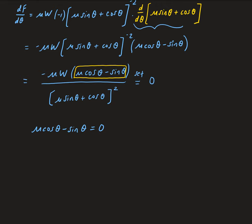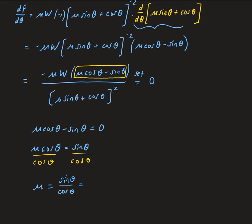Now we need to isolate theta. From mu cosine theta minus sine theta equals zero, we get mu cosine theta equals sine theta. We can divide both sides by cosine theta — actually, we want to divide everything by cosine theta. So we get mu equals sine theta over cosine theta, and that is equal to tangent theta.